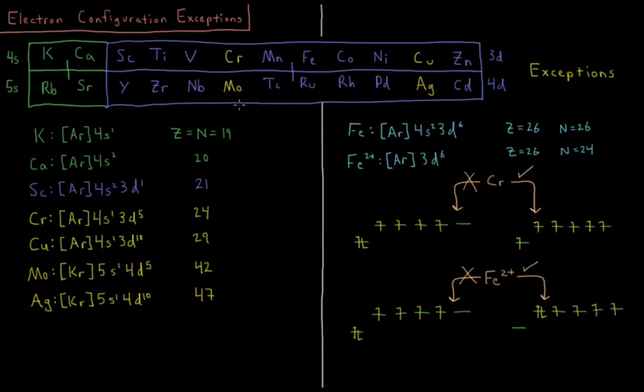So those are some exceptions in the d block. There are also exceptions for metal ions. Apparently 4s and 3d are close enough that if you ionize iron, or most transition metals, if you ionize them, take away two electrons, you actually lose the s electrons first.